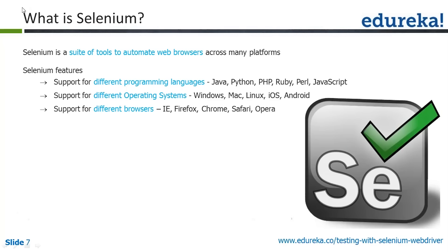Any web browser that can understand JavaScript is fit to run an automation script written in Selenium. Selenium supports different programming languages: Java, Python, PHP, Ruby, Perl, and JavaScript. It supports different operating systems: Windows, Mac, Linux, iOS, and Android. It also supports different browsers: Internet Explorer, Firefox, Chrome, Safari, and Opera — giving a wide range of platforms and browsers for automation scripts.